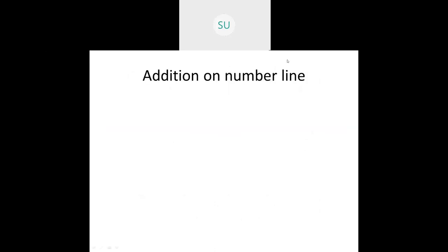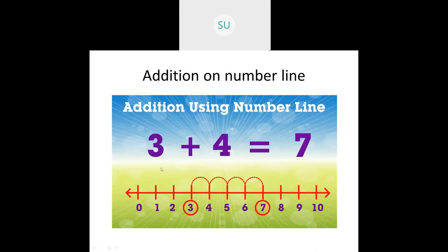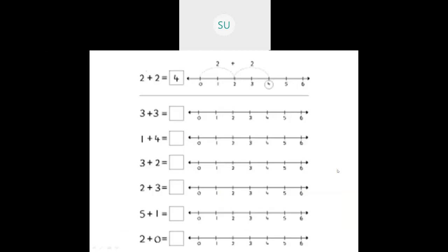Then we saw addition on a number line. For three plus four: starting from zero, you jump to three, then count four more steps — one, two, three, four — landing on seven. So three plus four gives you seven. For three plus three: jump to three, then count three more steps — landing on six. So three plus three is six.